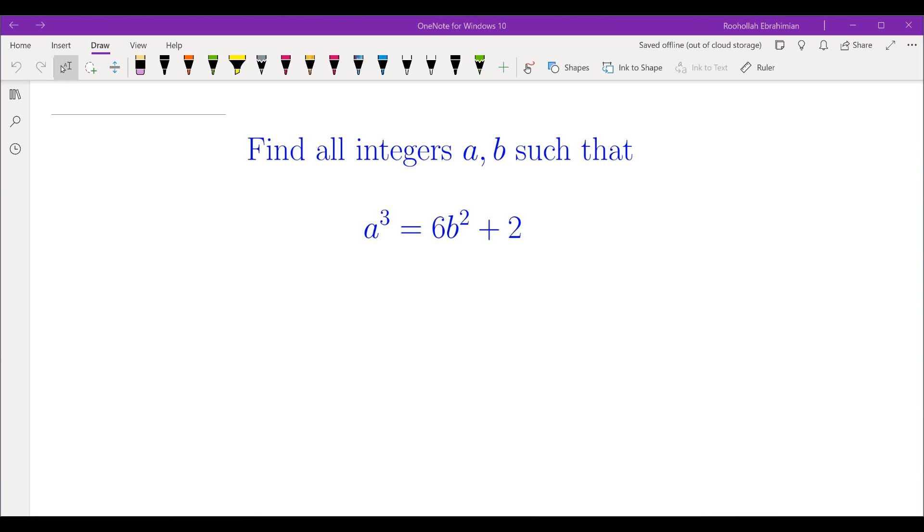Hello, in this video we're going to go over this Diophantine equation. Find all integers a and b such that a cubed is equal to 6b squared plus 2.